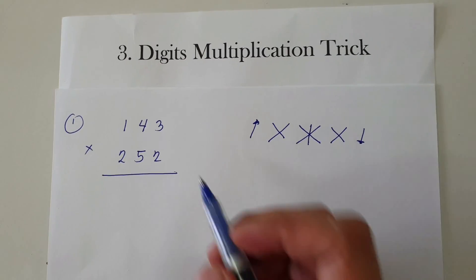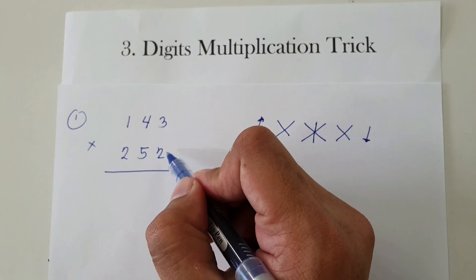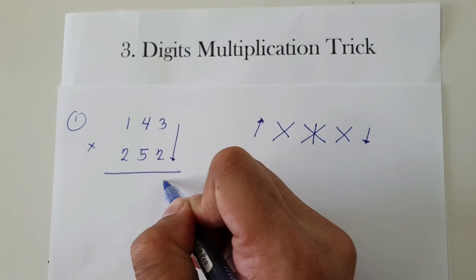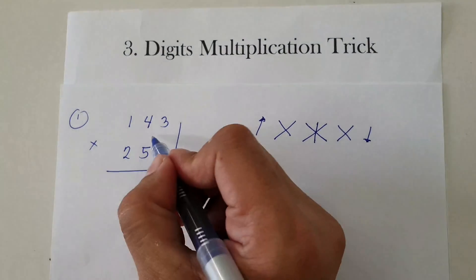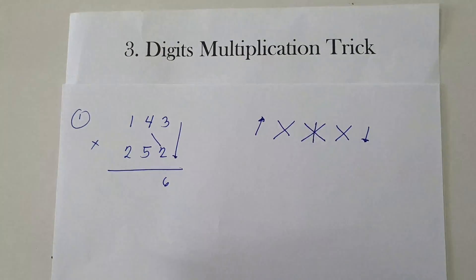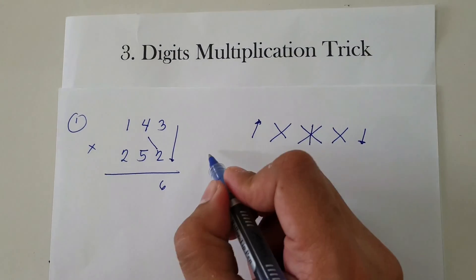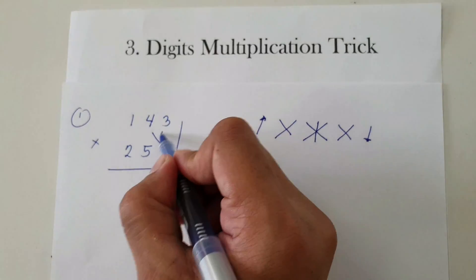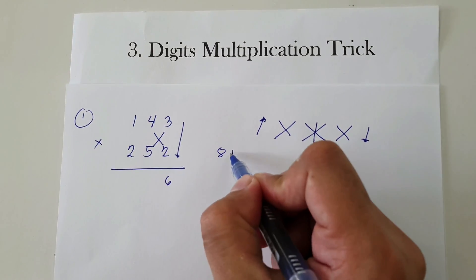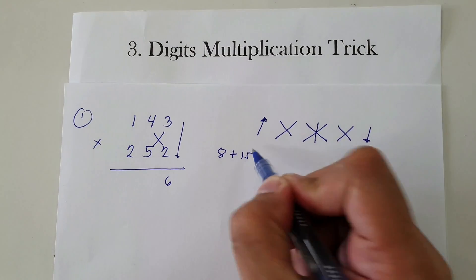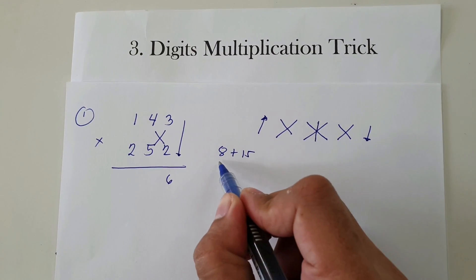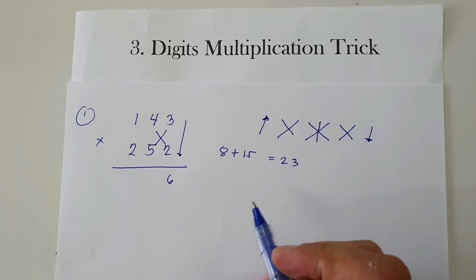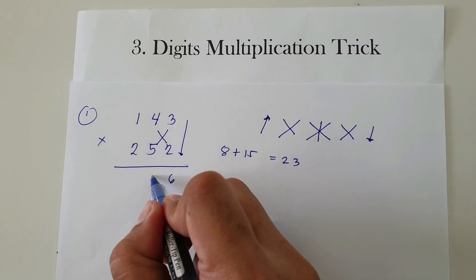So let's start. First, down: 3 multiplied by 2, that's 6. Then cross: 4 multiplied by 2 is 8, and 5 times 3 is 15. So let's add 8 and 15, that is 23. So we're going to have 3 and carry 2.